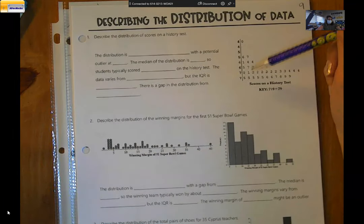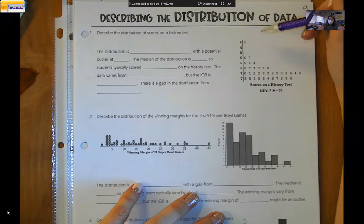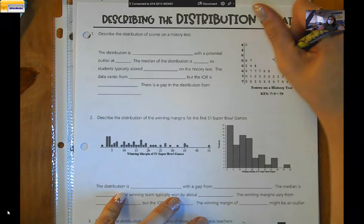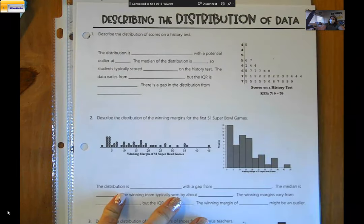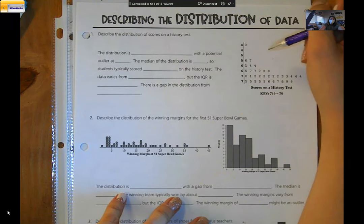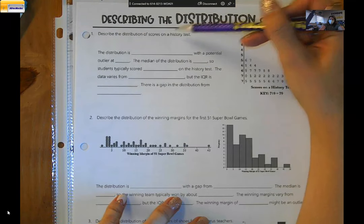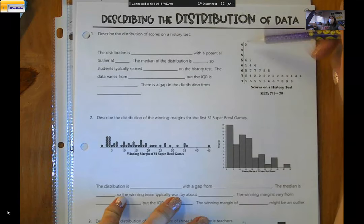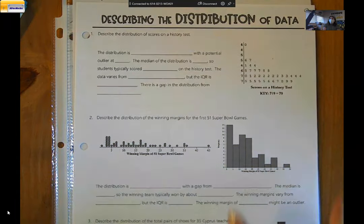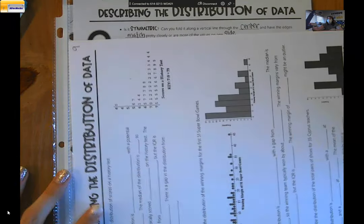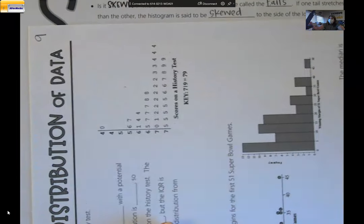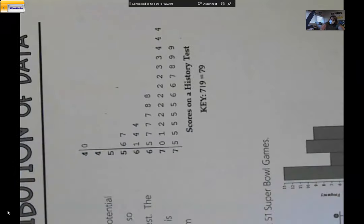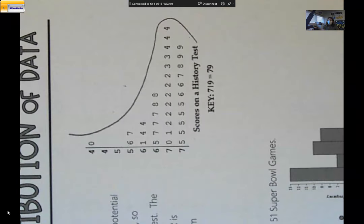All of the distributions on this page are distributions that we have seen in class already. This distribution is your STEM plot that you needed to make on Quiz 4 — the very last question said to make a STEM plot of the scores on a history test and split the STEMs. The first thing I always write down is the shape. In order to see the shape on a STEM and leaf plot, you need to turn it so that the STEMs are horizontal. You can draw a curve, and it becomes very clear that this distribution is skewed.